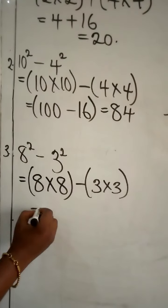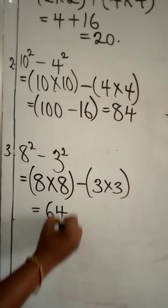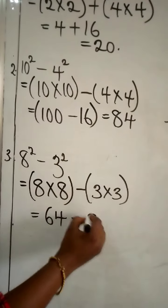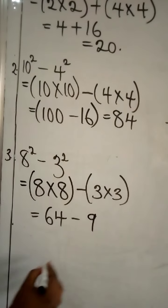Beautiful. So, 8 times 8 will give us what? 64. And then 3 times 3 will give us what? 9. Beautiful. Now, let's sum this together.